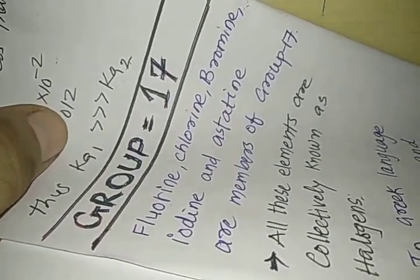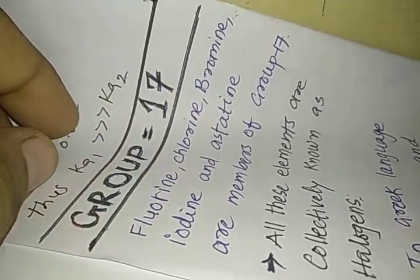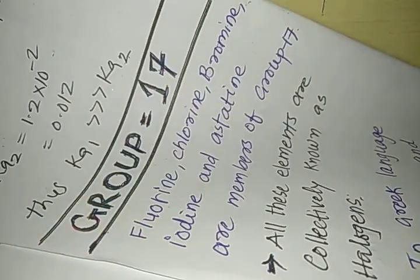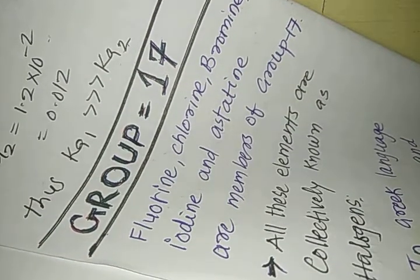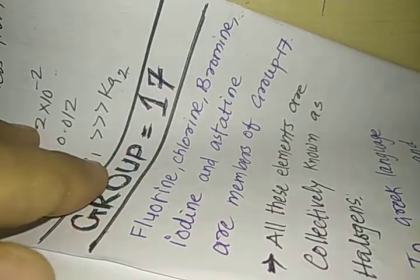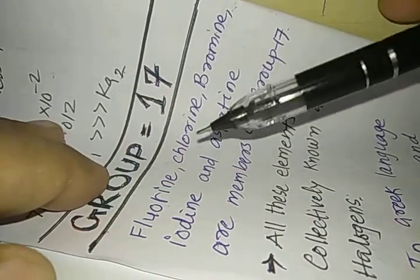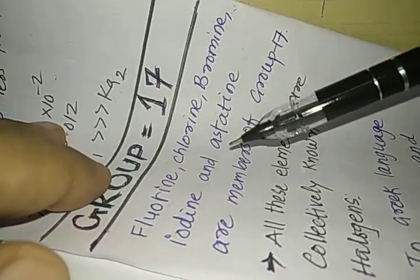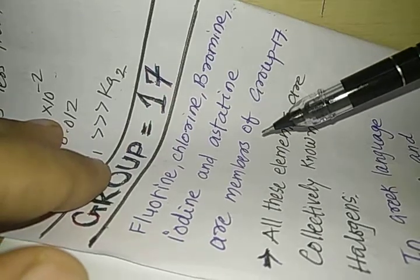Hello dear students, we have studied all the elements of Group 16. Now we should start studying the elements from Group 17. Group 17 contains fluorine, chlorine, bromine, iodine, and astatine which are the members of Group 17.